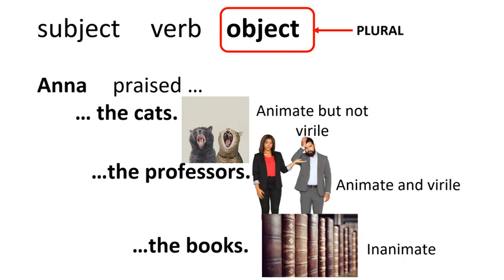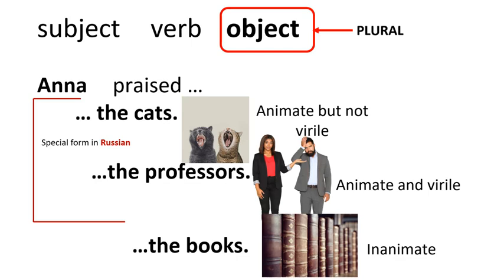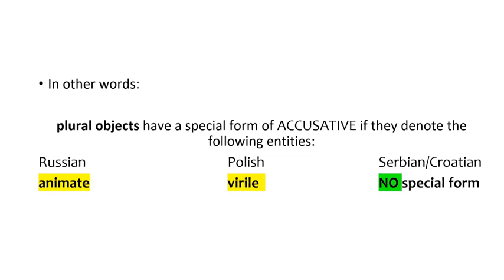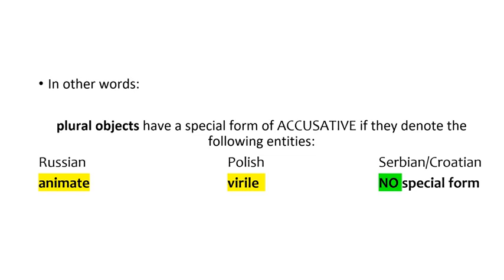In Russian, professors and cats are clustered together — they're animate and bear a special form in the accusative case. In Russian, all animate plural entities are special. The set includes nouns like women, dogs, Brits, students, crocodiles, and horses, but excludes nouns like computers, chimneys, dances, dichotomies, and airplanes.